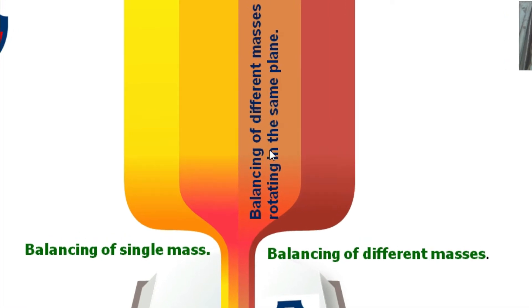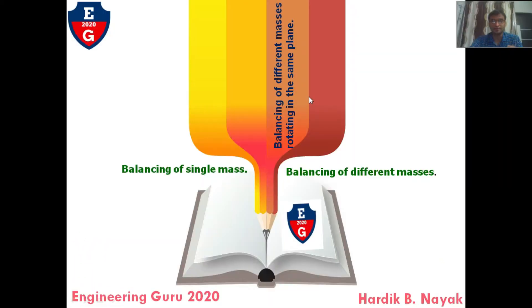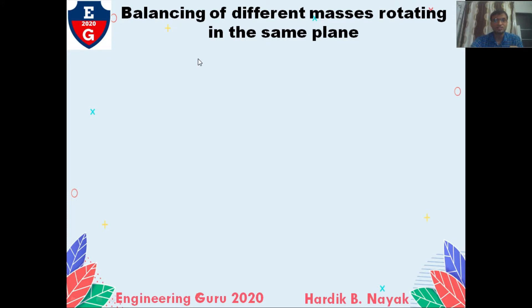Balancing of different masses rotating in the same plane means we have a number of different masses, but all the masses are rotating in the same plane.